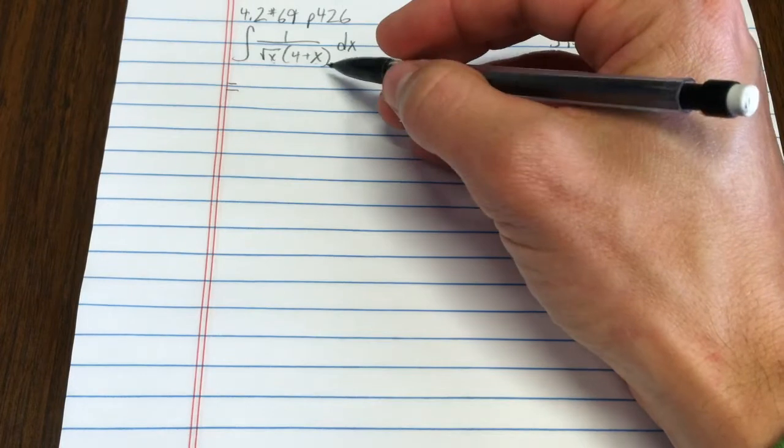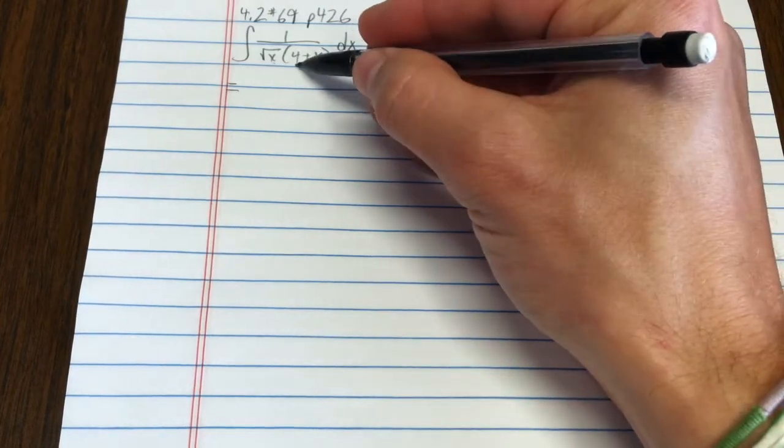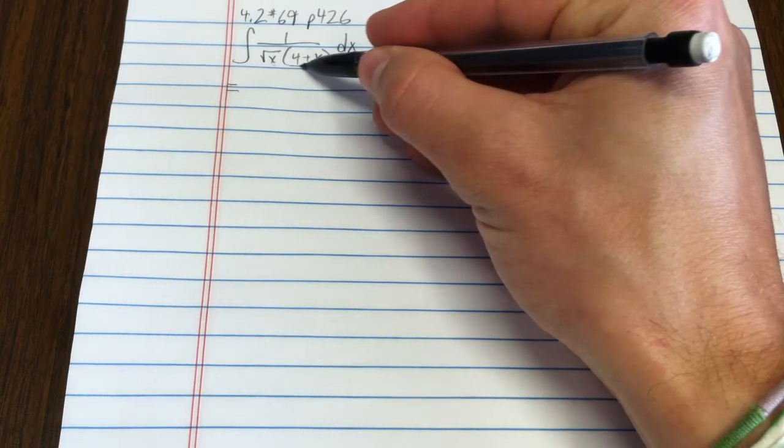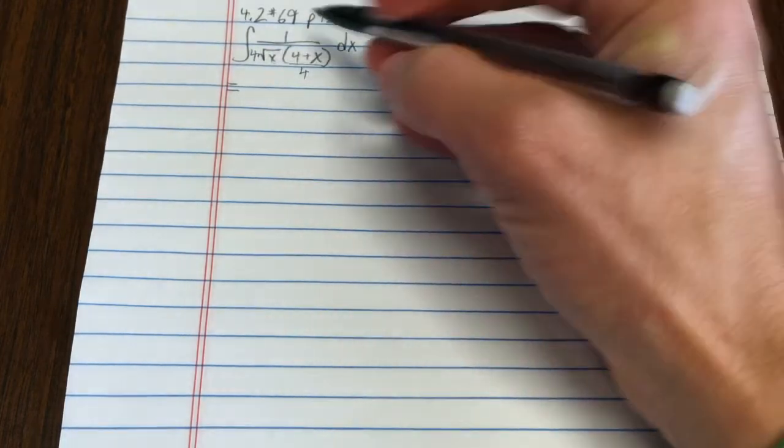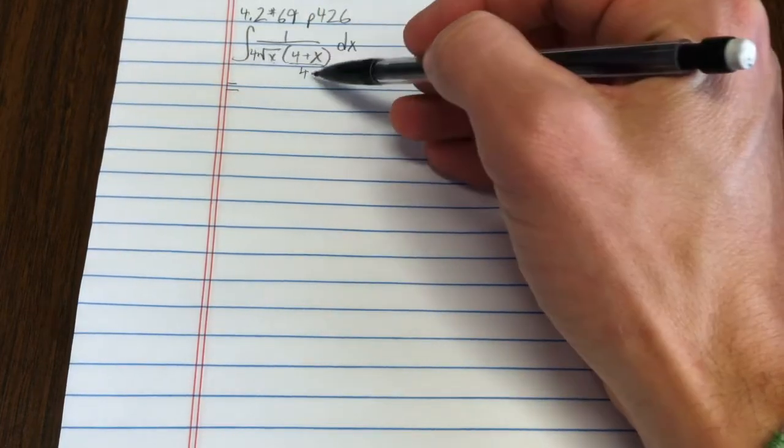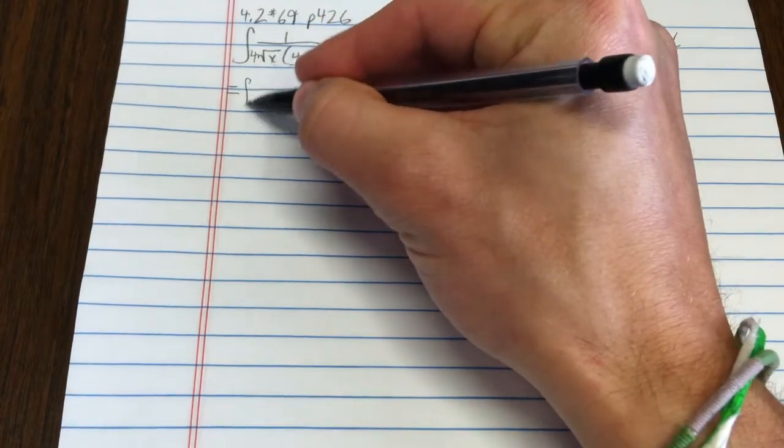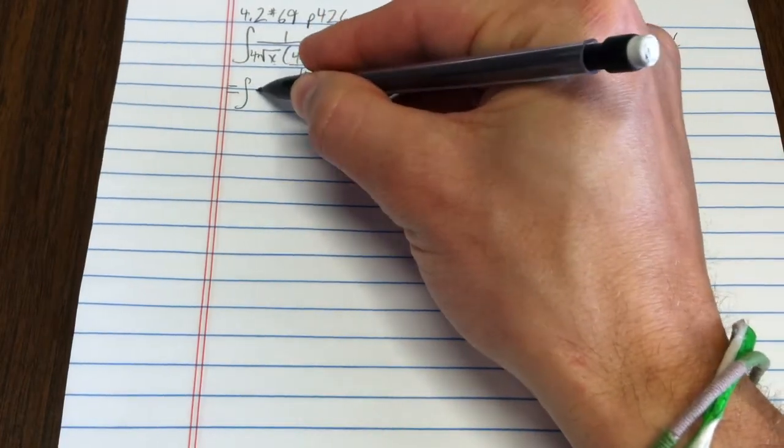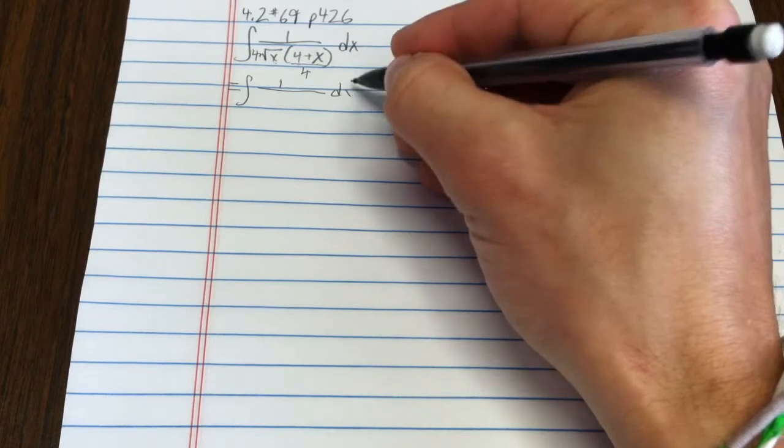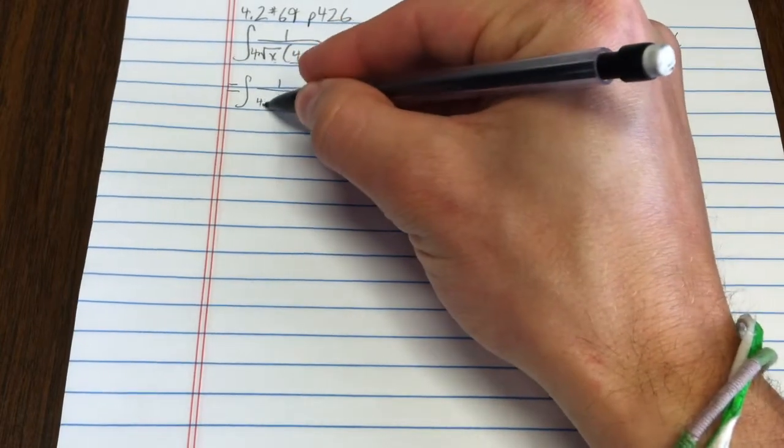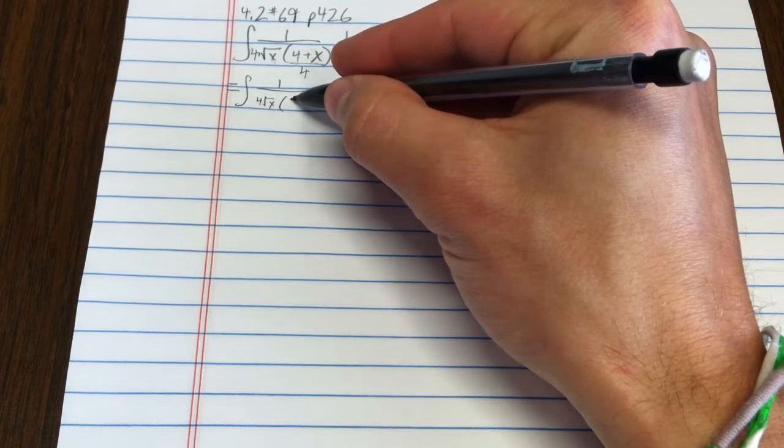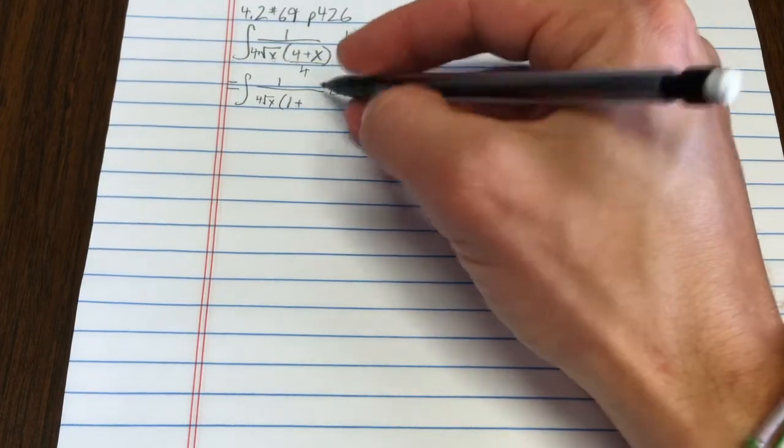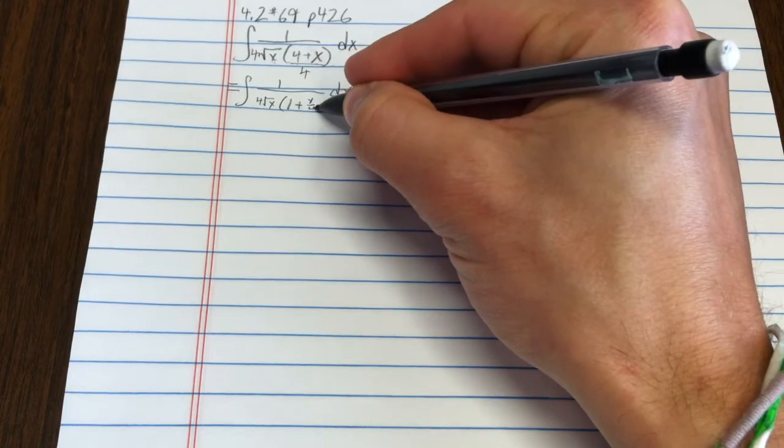To make that a 1, I suppose I would need to divide that by 4, which would mean multiplying the whole thing times 4. In the denominator, times 4 divided by 4 would give me 1 over 4 root x, and then here I have 1 plus x over 4.